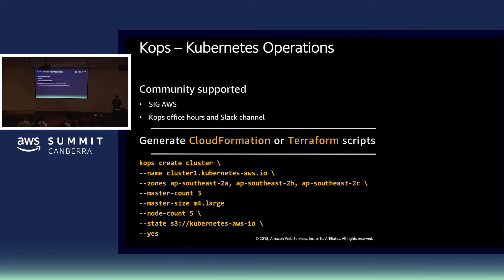One of the things I really like about KOPS as a utility is that it allows you to generate CloudFormation templates or Terraform manifests, which you can then use as a baseline for your own Kubernetes clusters. It might be that the opinions KOPS has about how things should be done don't necessarily align with your own. So you can generate these templates, tweak and modify them, and use them to build your own best practice Kubernetes cluster.